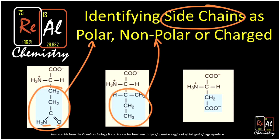Charge is the easiest if you have an amino acid list that shows charges — that's the amino acid list I always use because then it's really easy. You just see a charge hanging out, and if you see a charge hanging out on the side chain, you know it's charged. If you don't have an amino acid list with those on it, then you may just want to Google one.